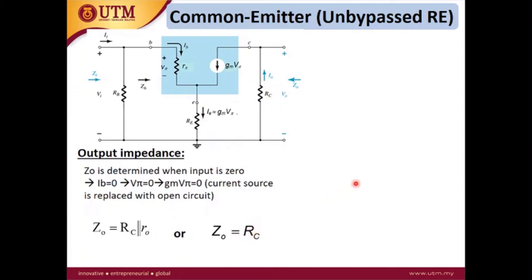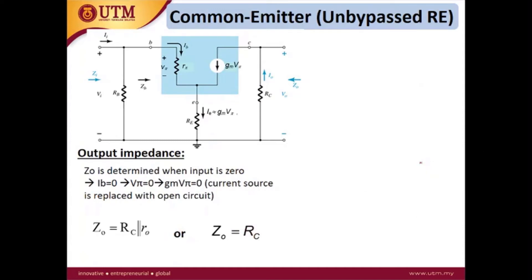What we see from the output side is only RC, so Z_out equals RC. Note that the small-signal resistance ro is removed here — this is the case where we assume ro equals infinity.